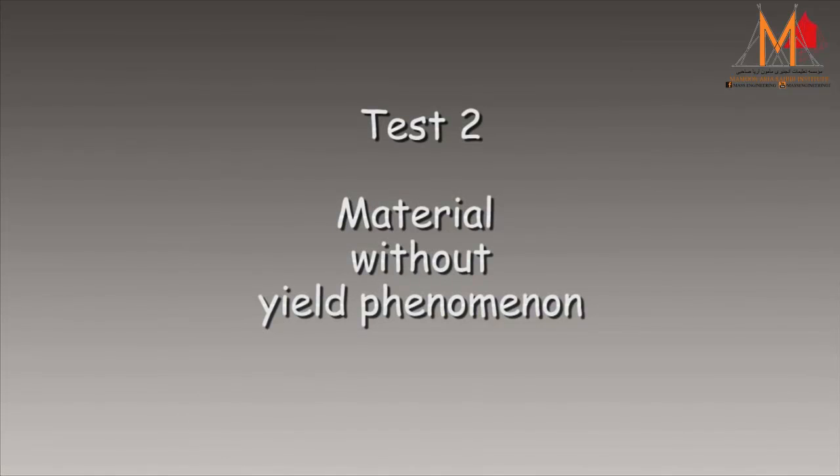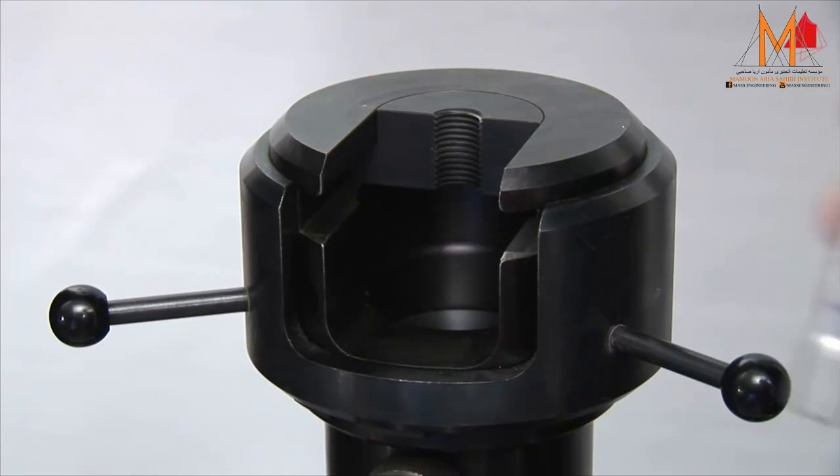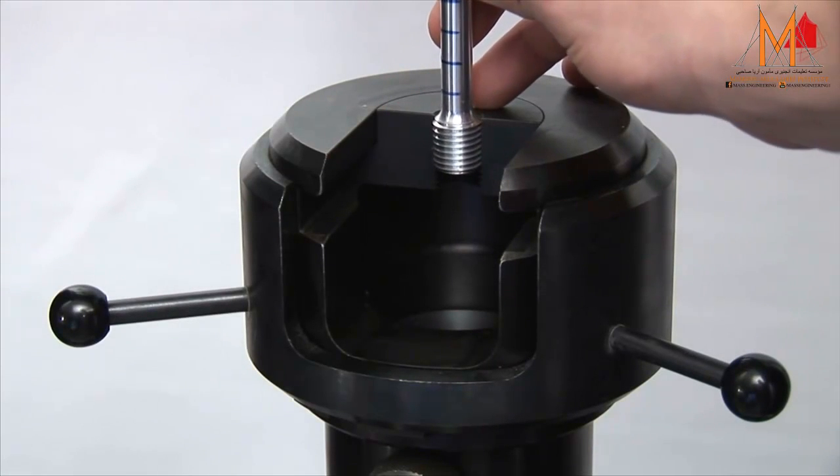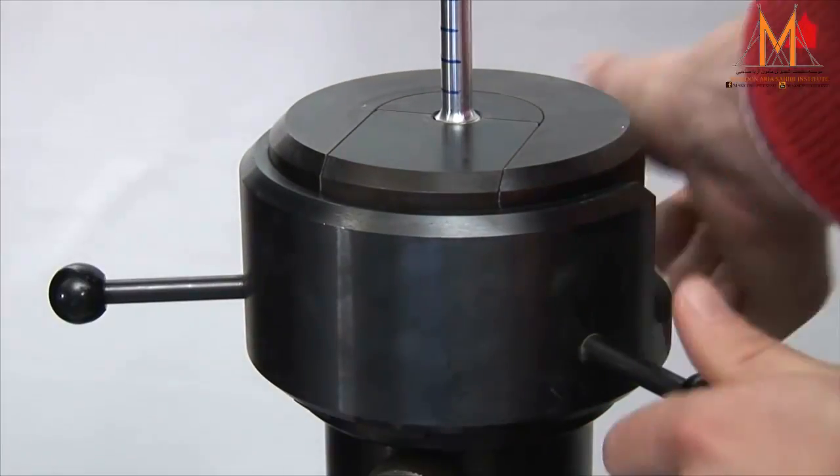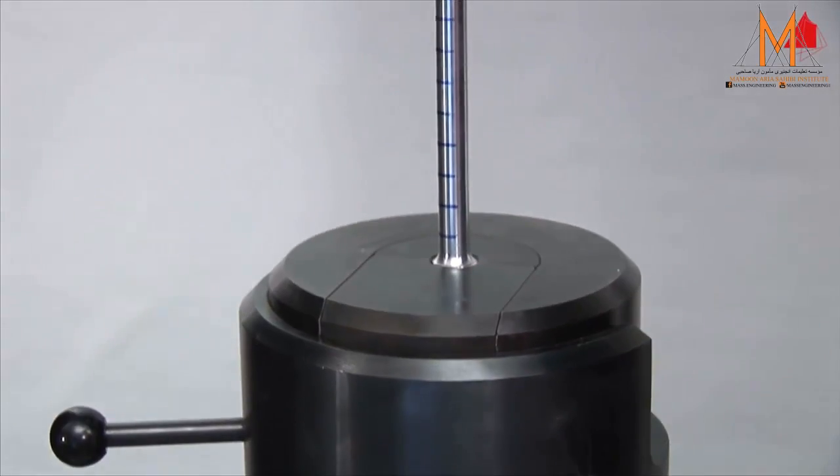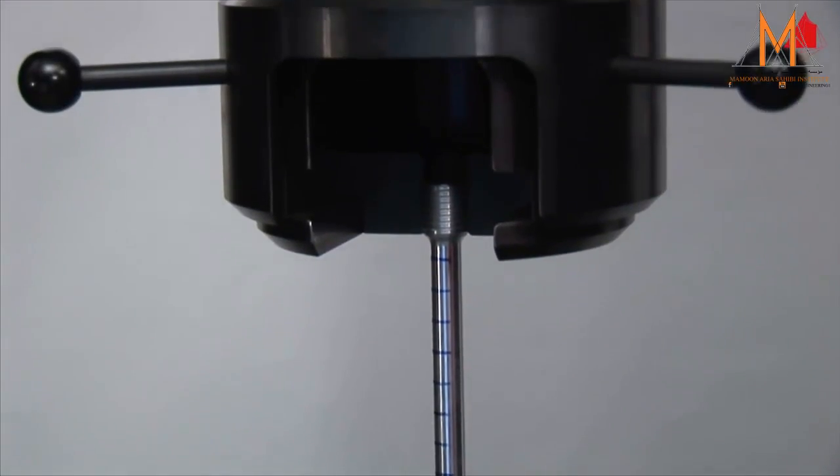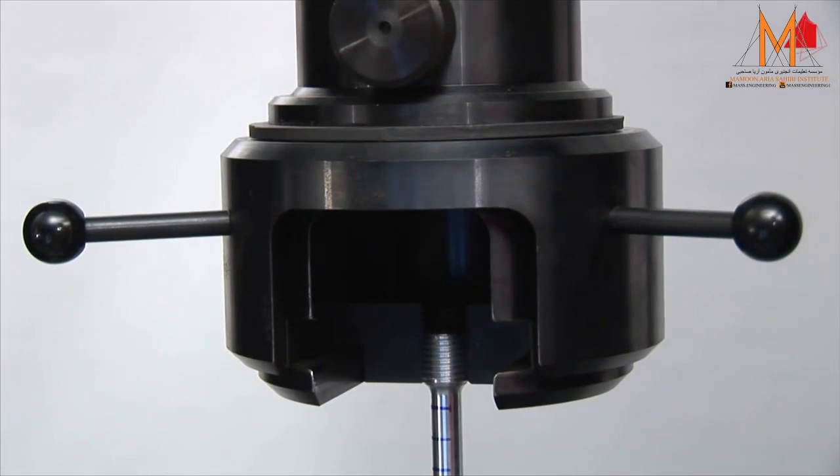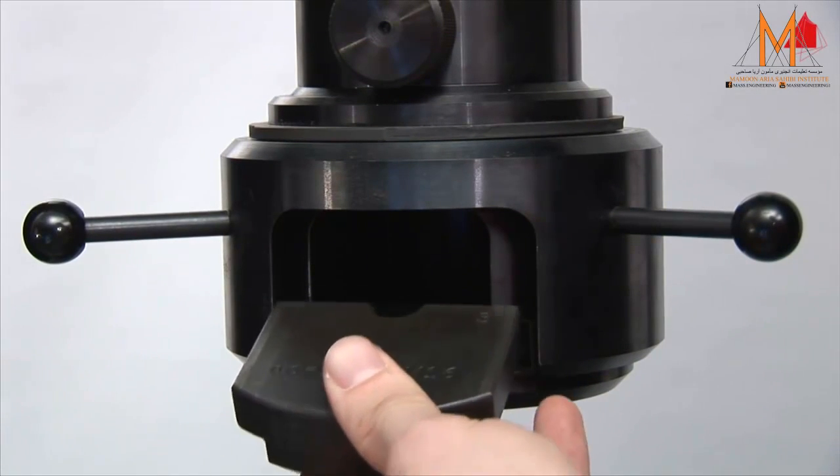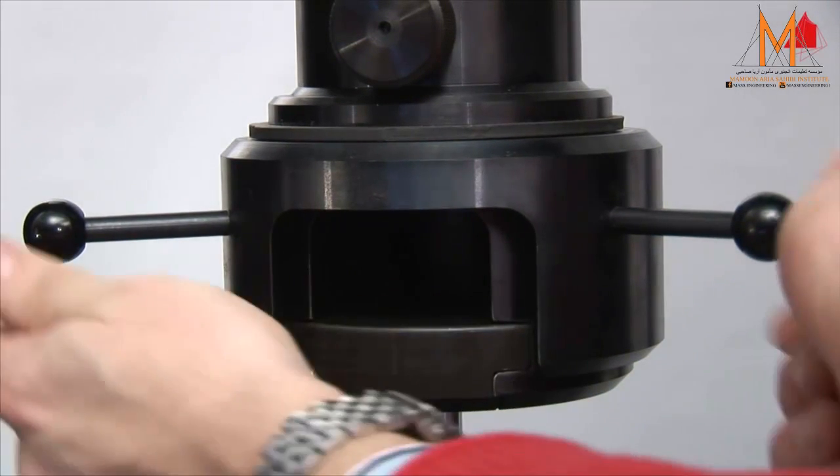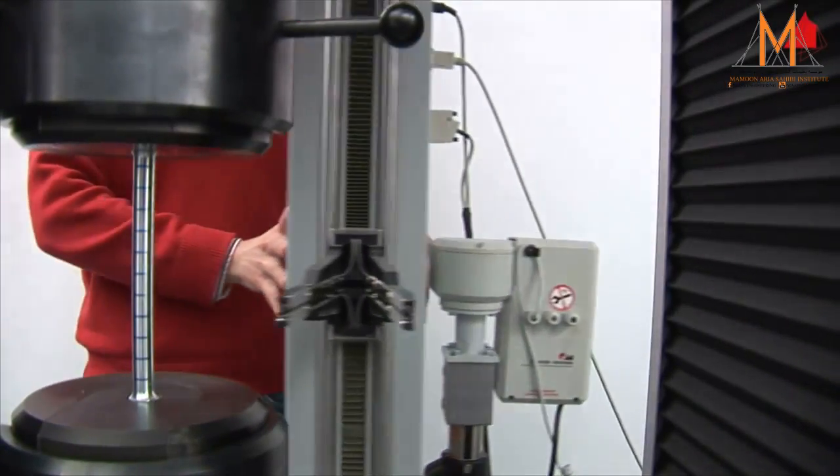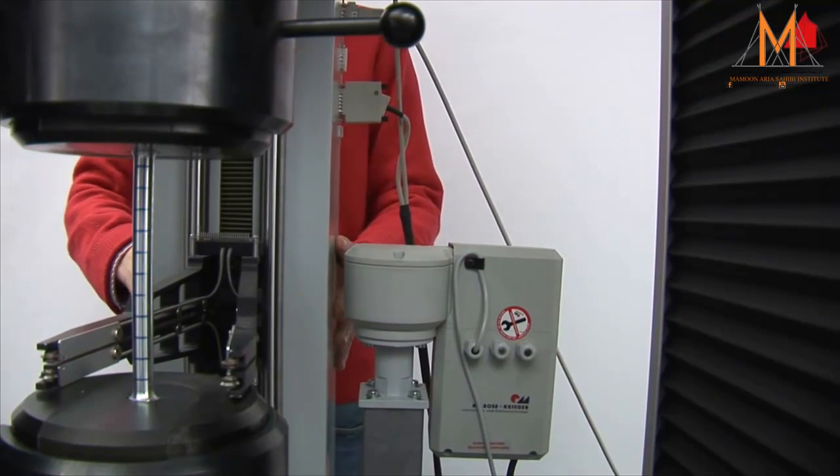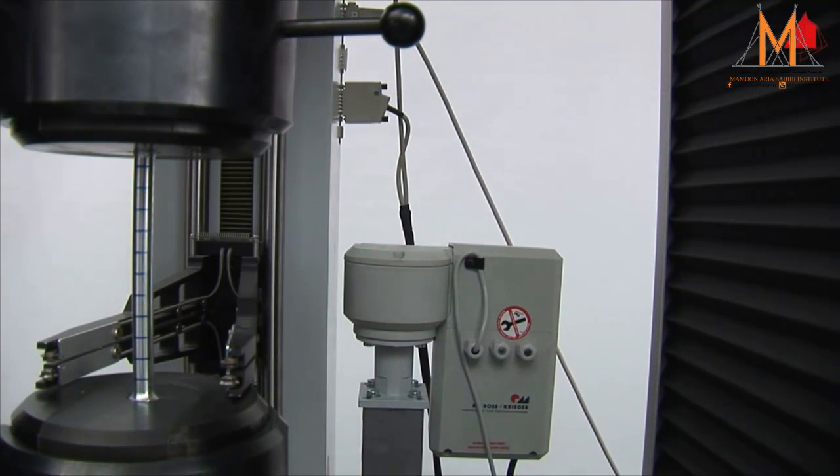In the second tensile test, a material without yield point phenomenon is to be tested. In this case, it is a precipitation-strengthened aluminium alloy. The test piece has exactly the same shape and dimensions as the specimen in the first test. It is cylindrical with an original diameter of 10 mm and an original gauge length of 100 mm. After fitting the test piece into the testing machine and panning the extensometer into its working position, the test can start.